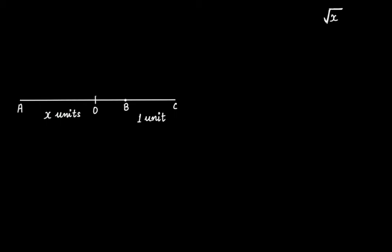If we have to find out the square root of x, where x is any positive real number greater than zero, and we have to find it geometrically, then how will we do this? For that, first draw a line segment AB which has a length of x units. From B, extend this line segment up to C, and the length of BC should be equal to one unit.